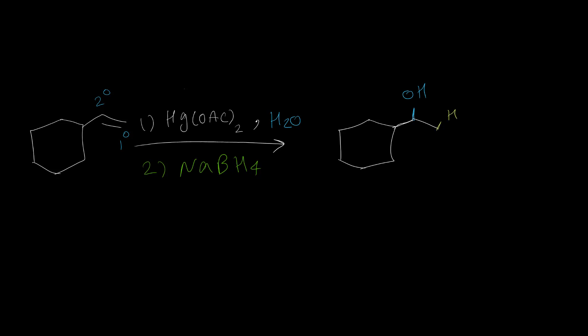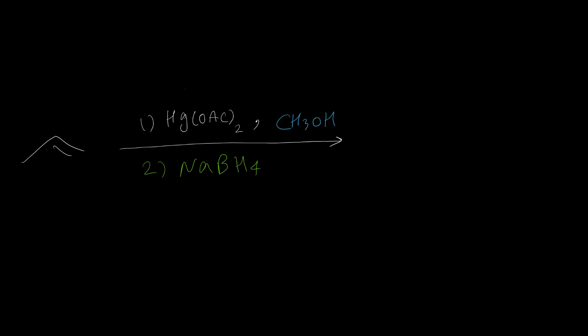Let's have some examples with alcohols. Here is the first example for alkoxymercuration. This carbon is primary and this carbon is secondary. Let's write the product without the double bond. On the more substituted carbon, instead of OH, I should put OR — so I need to put OCH3 here — and then H on the other carbon. We don't write hydrogen in bond-line structures.